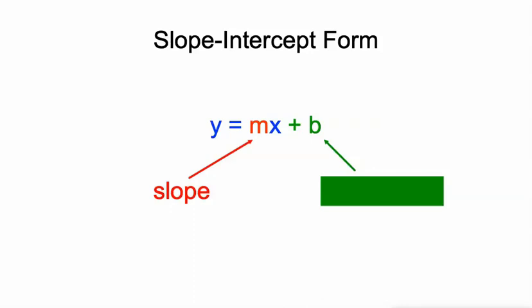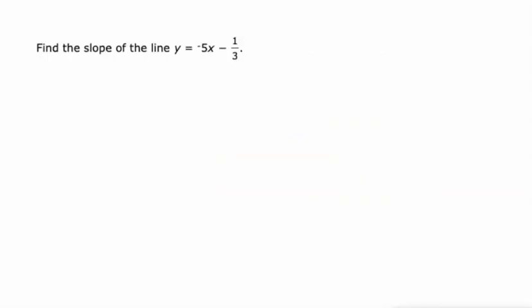the thing that's being multiplied by x is called the slope. That's the constant rate of change. And that plus or minus value there, that constant off the end is the y-intercept. It's the value of y when x is zero. More on that later as we start dealing with graphs. Today we're just looking at equations.